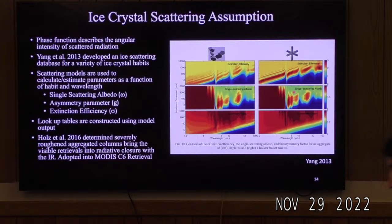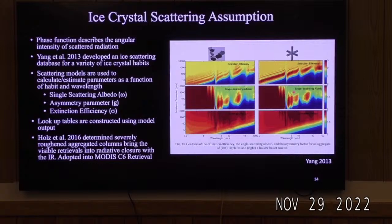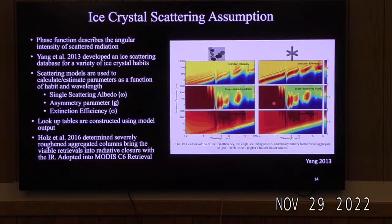The ice scattering assumption is really the phase function, which describes the angular intensity of scattered radiation. Yang et al. 2013 developed an ice scattering database for a variety of ice crystal habits, outputting single scattering albedo, asymmetry parameter, and extinction efficiency in a lookup table. In Baum et al. 2016, severely roughened aggregate columns were found to bring visible retrievals into radiative closure with the IR, which is why the MODIS Collection 6 retrieval adopted the severely roughened aggregate columns assumption.